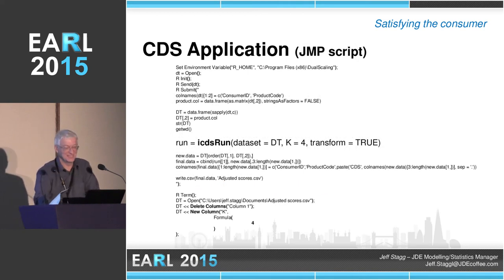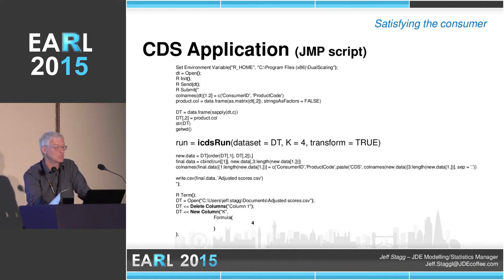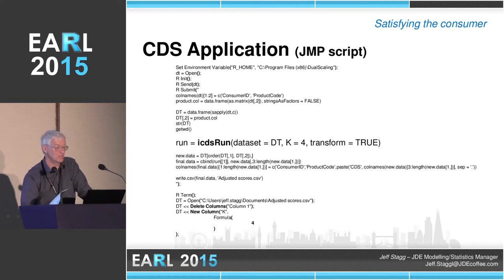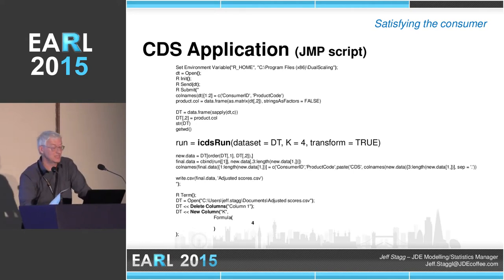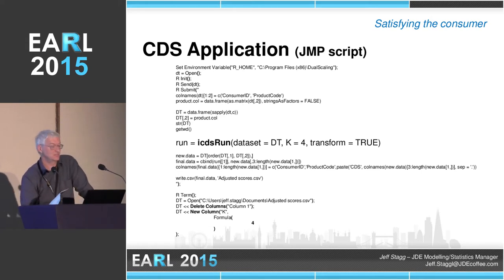I don't think you need to read this too much, but essentially the JMP script at the top takes the data. The bit in red converts it into R format. It's then run through the ICDS run function. The data comes back from R and then converted back into JMP script for further processing. ICDS run is the actual CDS application written in R. DT is the data file, K is the number of groups we want to find, and transform is something set for us to rescale the data back to the original global average and standard deviation — we can turn that off as true or false.